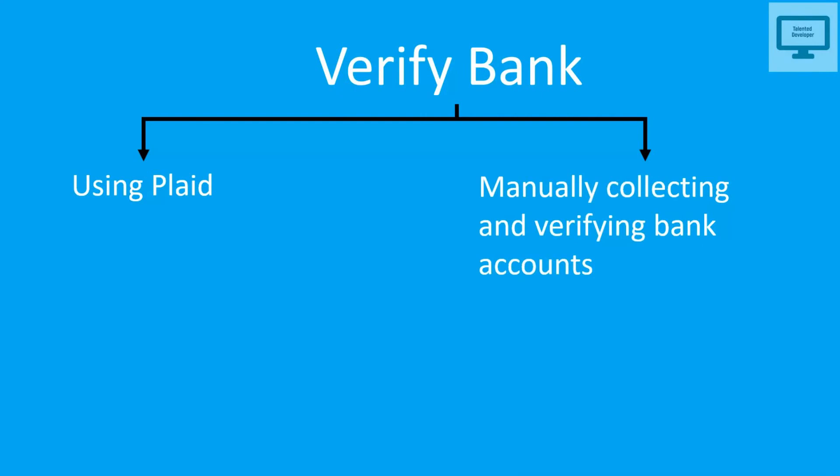The second way is manual verification. Manual means we have to use Stripe code. There are steps: first add the account, then verify it. These are the steps we are going to follow in the coding section. This was the overall flow. I will explain everything in the coding section. Thank you guys.